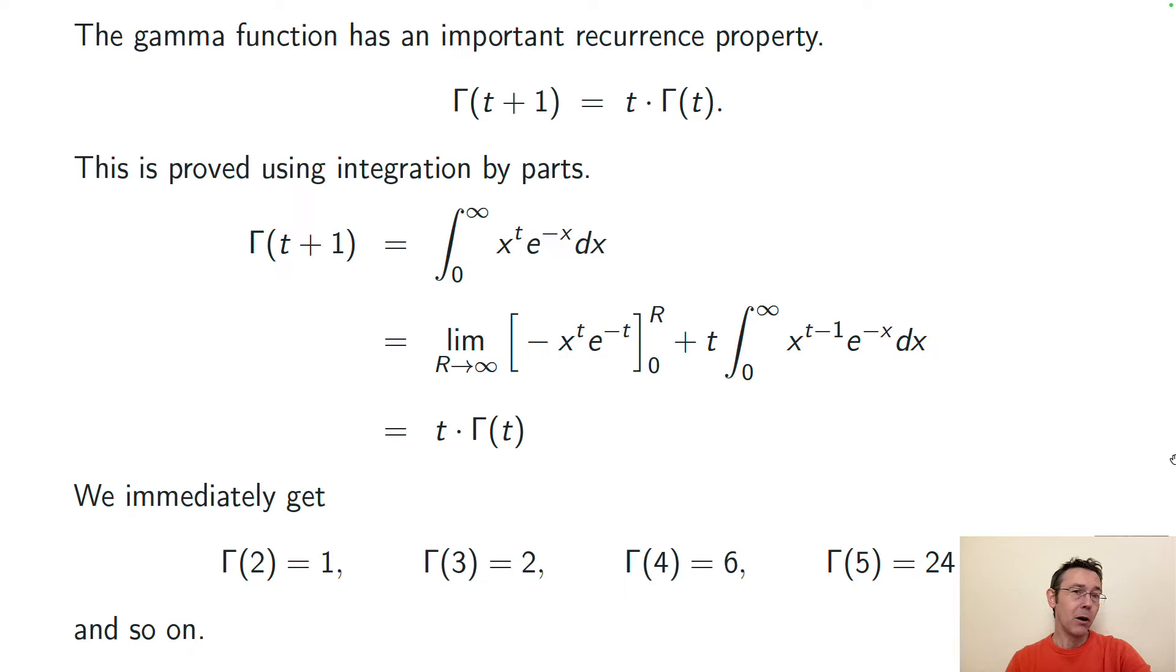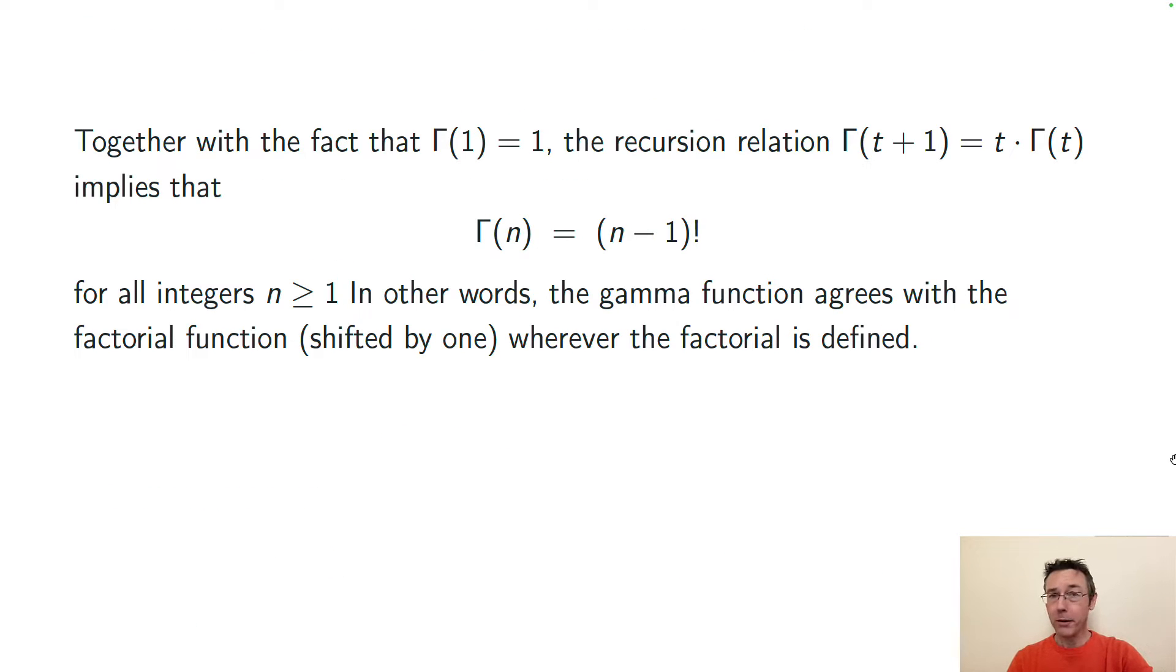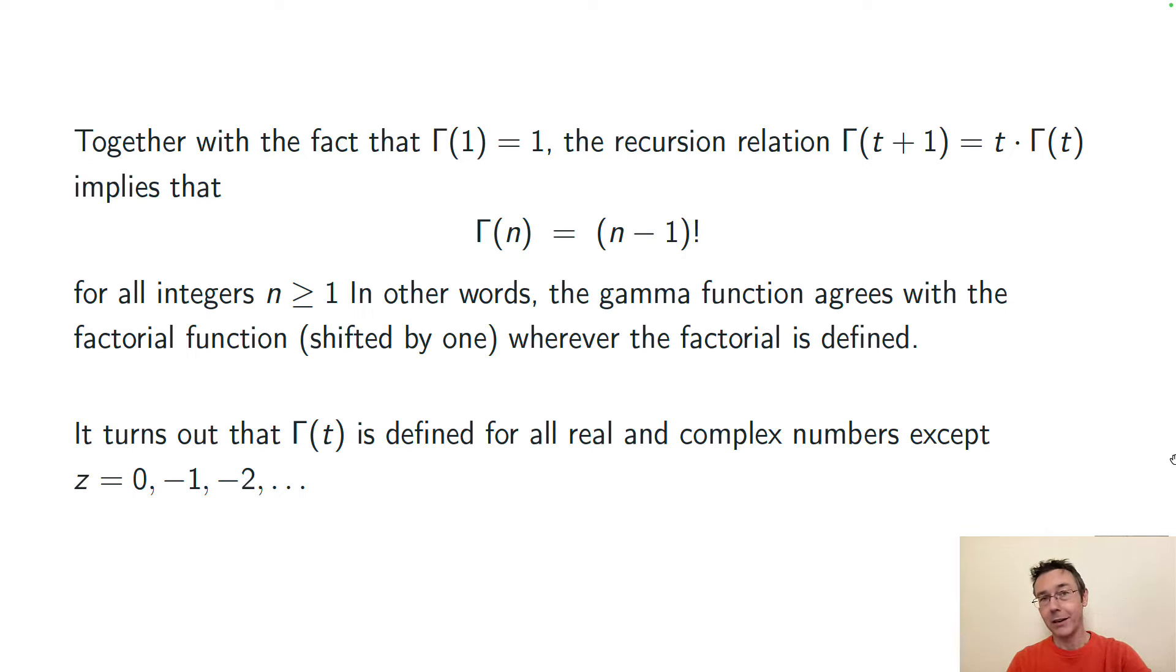So since we know gamma of 1 is 1, we also know gamma of 2 is 1, gamma of 3 is 2, gamma of 4 is 6, gamma of 5 is 25, and so on. And that's a property that's familiar from the factorial function. In particular, if n is a positive integer, then gamma of n is equal to n minus 1 factorial. So it really just is the factorial function shifted by 1.